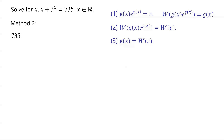We rearrange the equation: 735 minus x equals 3 to the power of x. Divide the equation by 3 to the power of x, we have 735 minus x over 3 to the power of x equals 1.